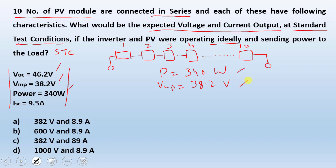Which is very easy. Here we can see that Imp, the maximum current under these conditions, which is our 340 watt and Vmp is 38.2. We can see 340 divided by 38.2 is equal to 8.9 amperes.